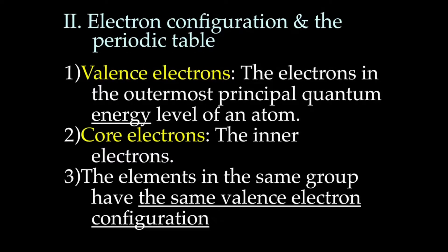Let's talk about specifically the electron configuration and the periodic table. We have valence electrons, which are the electrons in the outermost principal quantum energy level. That's huge. Energy level of an atom.